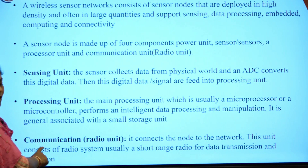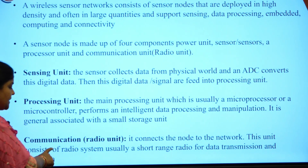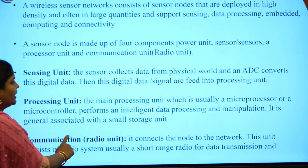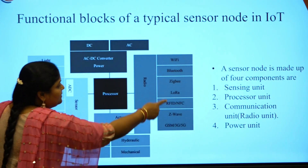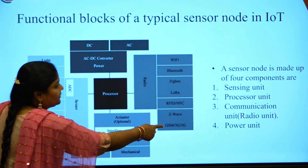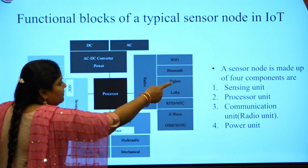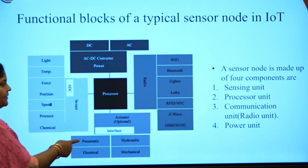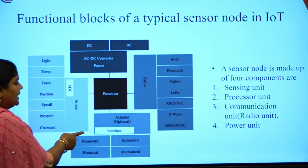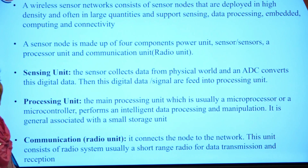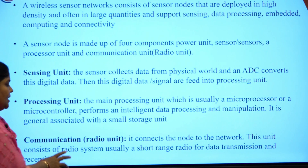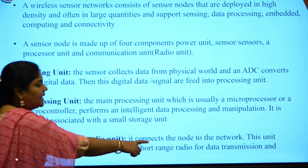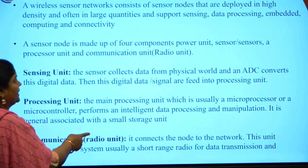The next component of the sensor node is the communication or radio unit. It consists of different types of communication protocols like Wi-Fi, Bluetooth, ZigBee, LoRa, and Z-Wave. The basic functionality of the communication or radio unit is to connect the node to the network.